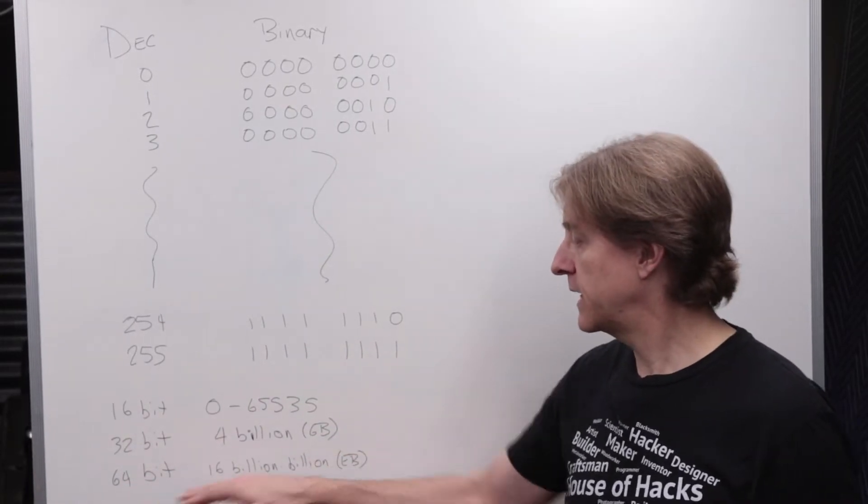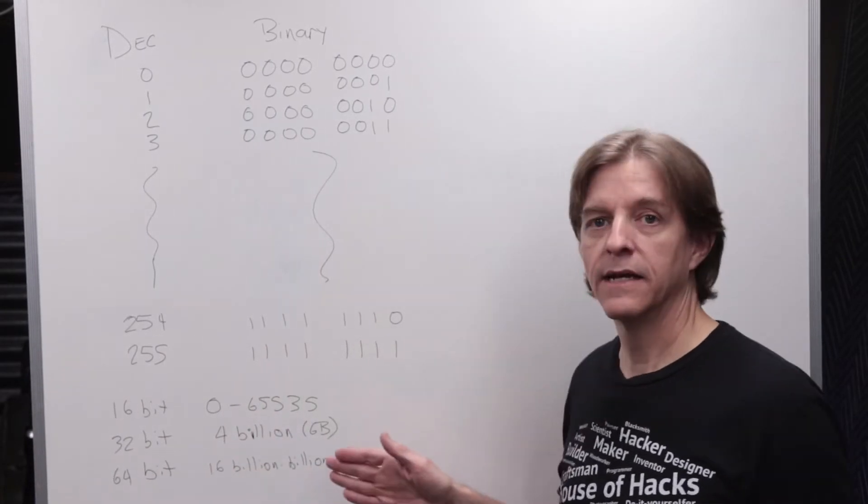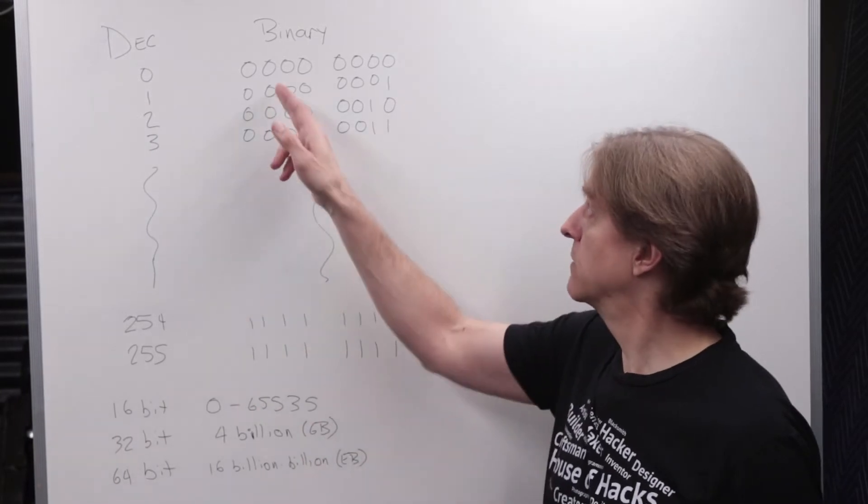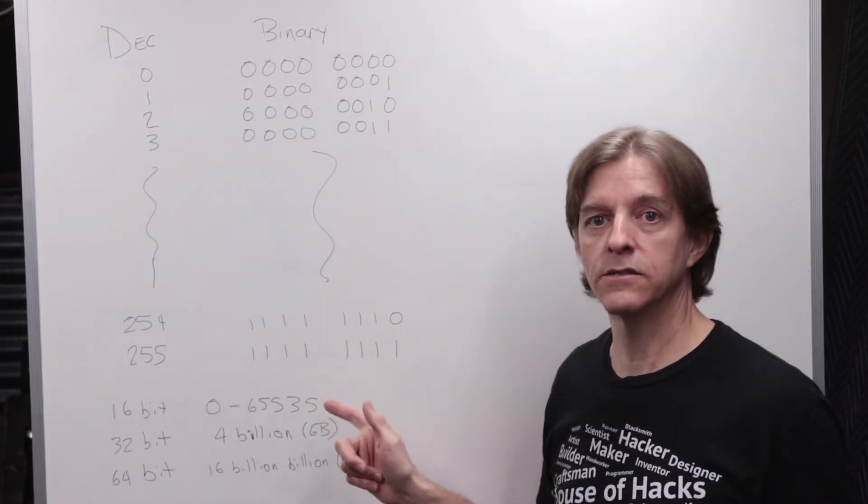And with 64-bit, it can count all the way to 16 billion billion or an exabyte. But in the end, they're all just positive integer numbers from 0 to all 1s, depending on how many 1s there are.